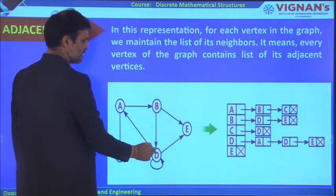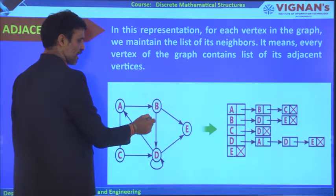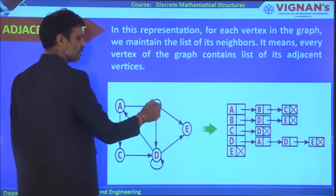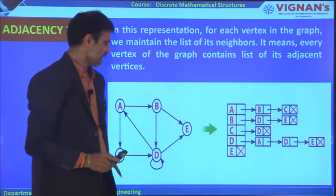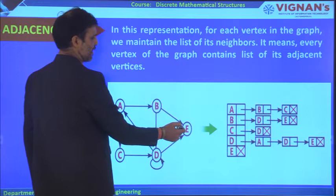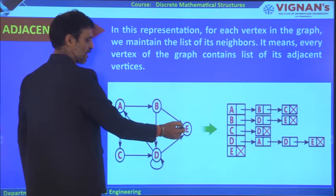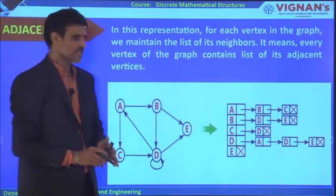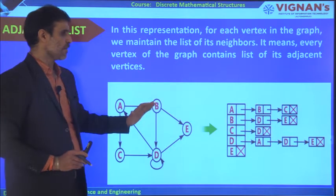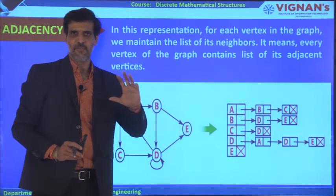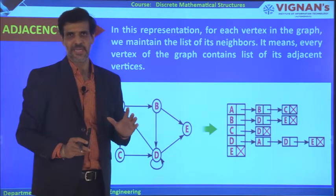For the adjacency list of the directed graph: node A has neighbors B and C; node B has neighbors D and E; node C has neighbor D; node D has neighbors A and E. For node E, there are no edges going out from E to any other vertex — all edges come towards E — so E has no adjacency nodes. This is how we represent a graph as an adjacency list.